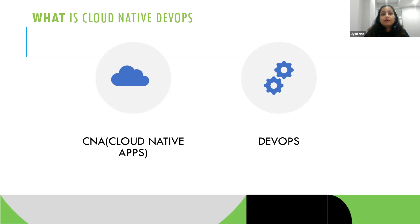Let's dive in and understand what cloud native DevOps is. Most of us are very familiar with DevOps already — most projects are moving towards DevOps practices. But what do we mean by cloud native DevOps? To understand it, let's break it into two pieces: cloud native applications and DevOps. When we implement DevOps practices for cloud native applications, that is holistically called cloud native DevOps.